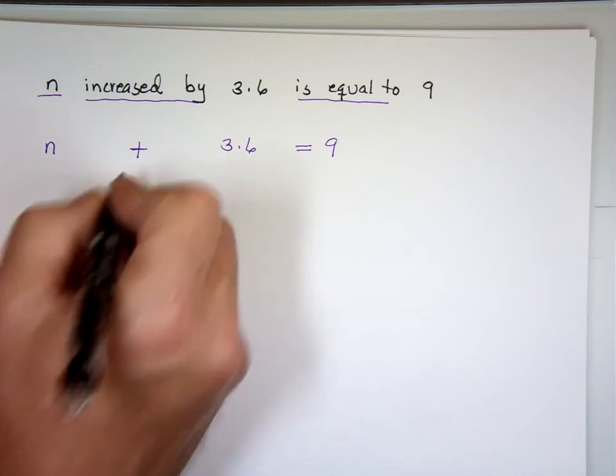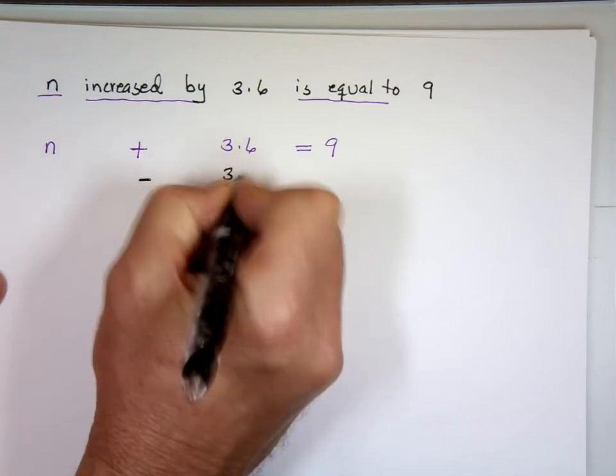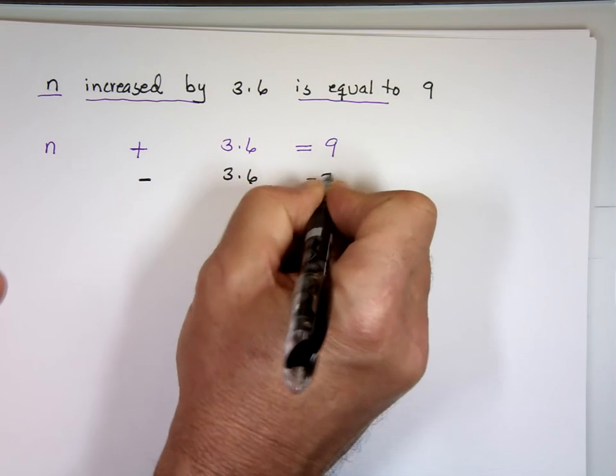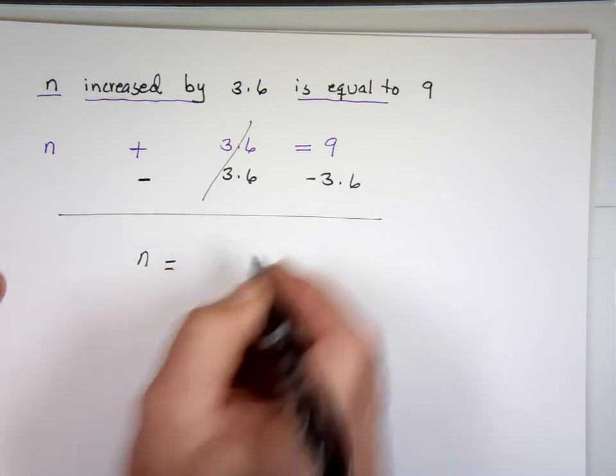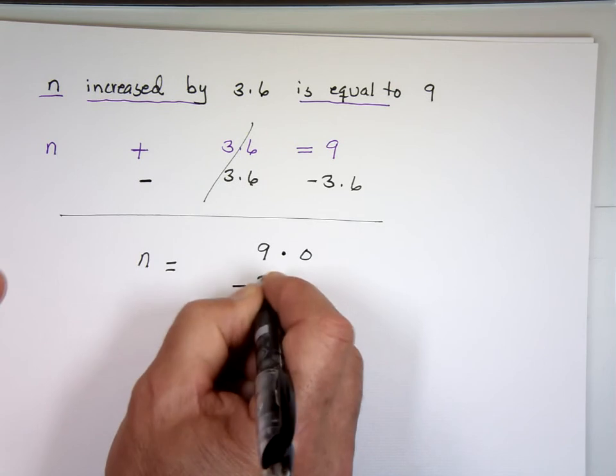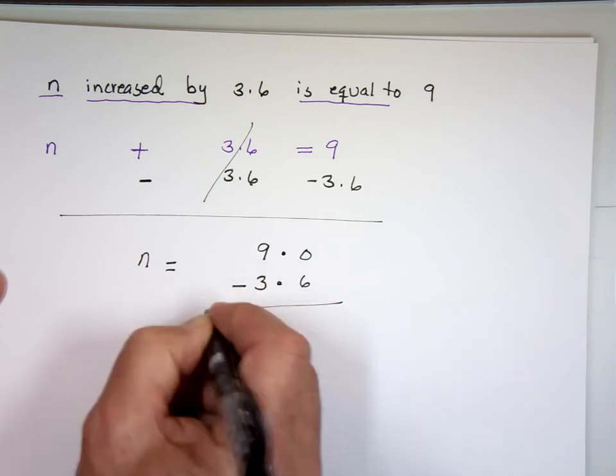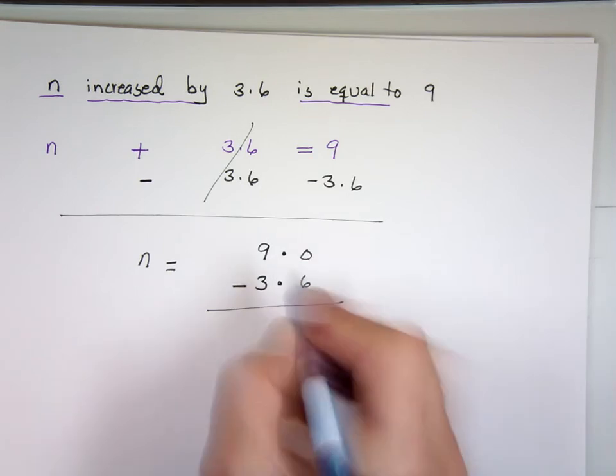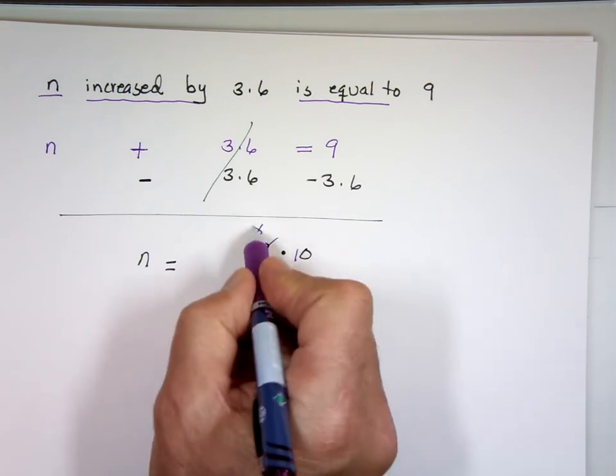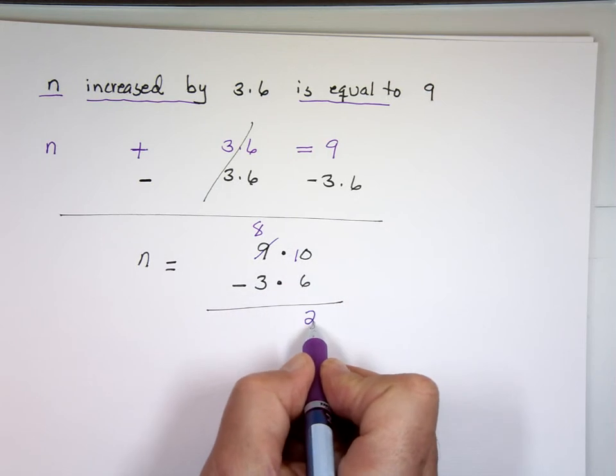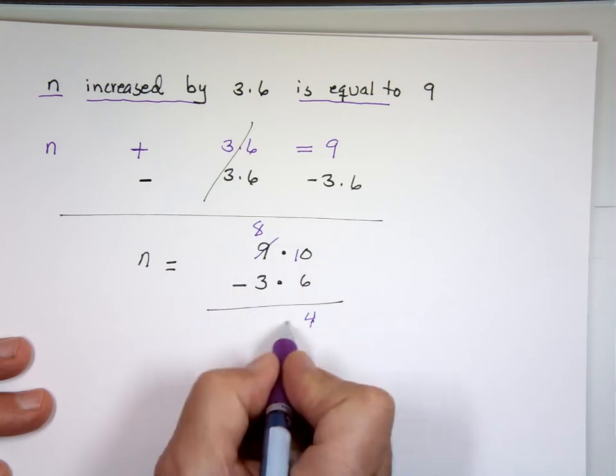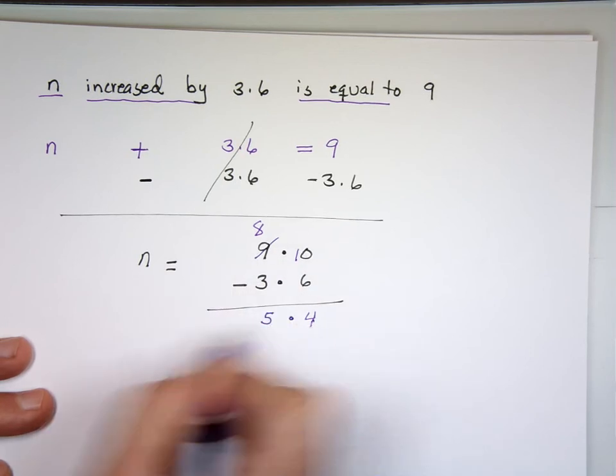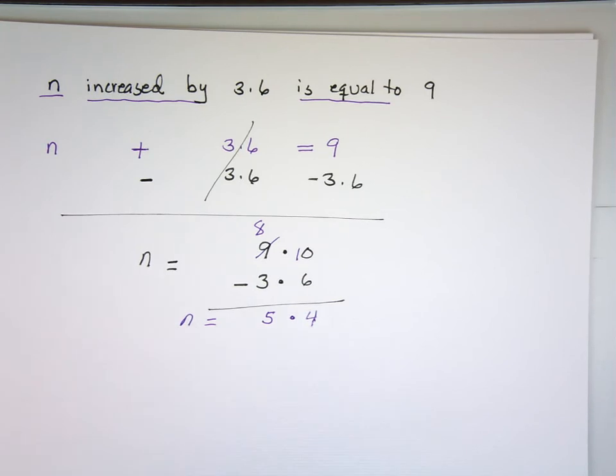So now I've got to subtract 3.6 from both sides. And let's subtract them. That's 9.0 minus 3.6. You've got to line the decimal point if you remember. 6 from 0 you can't. This becomes 10. This becomes what? 8. 6 from 10. 4. 3 from 8 which is what? 5. N equals 5.4.